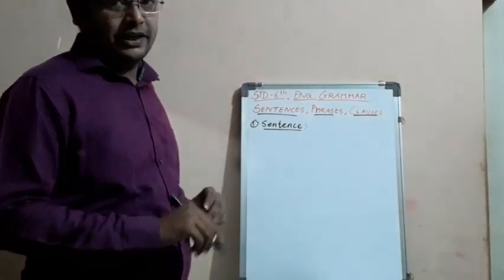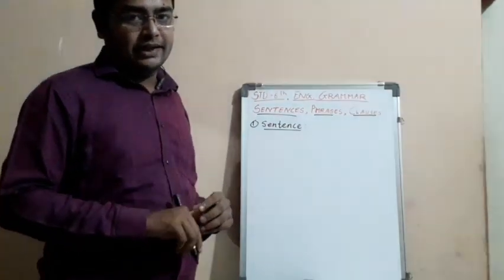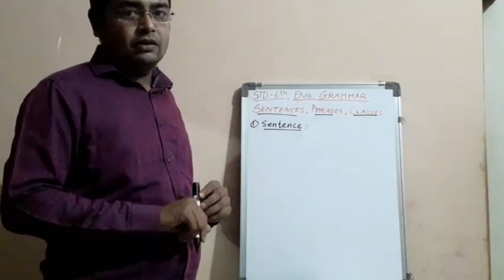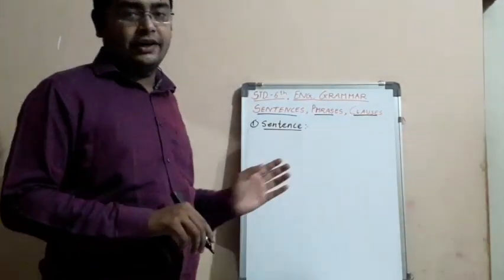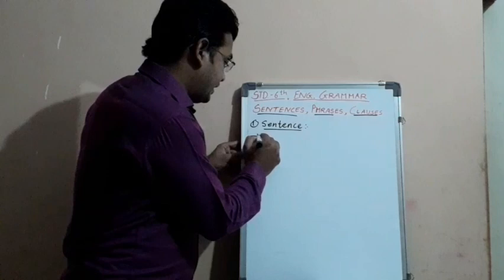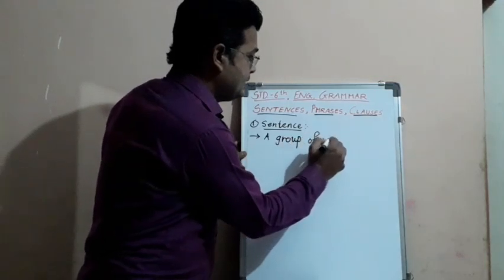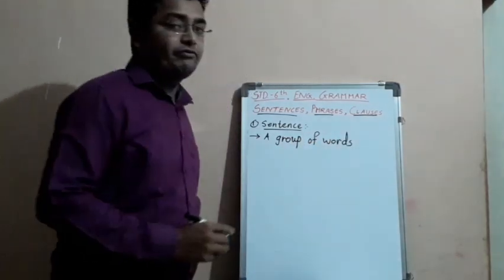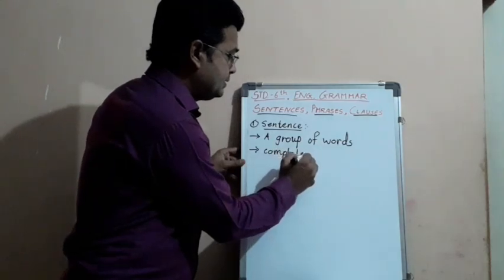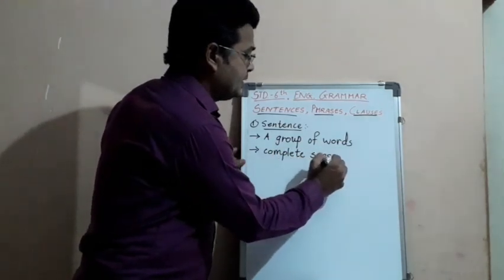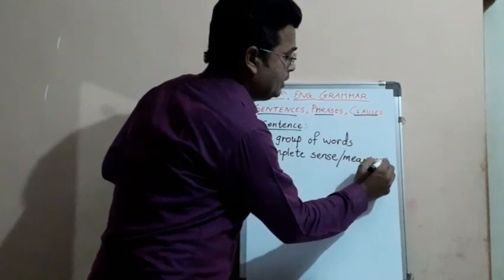A sentence is a group of words that gives us complete sense and it has a subject and predicate. It starts with a capital letter. It generally ends with a full stop in affirmative sentences. For asking questions we use a question mark, and for showing sudden feeling we use an exclamation mark. So, a sentence is a group of words which gives us complete meaning or a complete thought of a speaker.